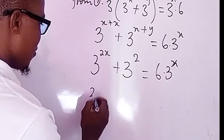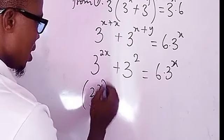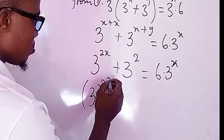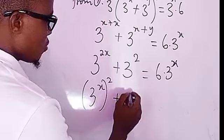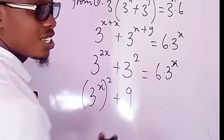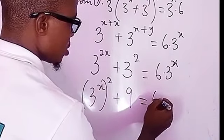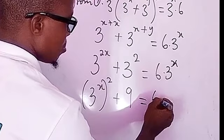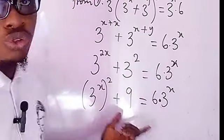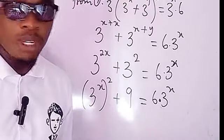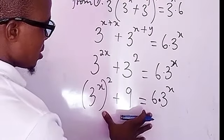From there, we can rewrite this equation. Three to the power of two x can be written as the square of three to the power of x, plus three squared — which gives us nine — equals six times three to the power of x.